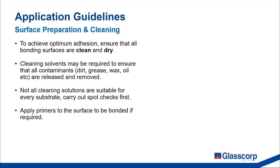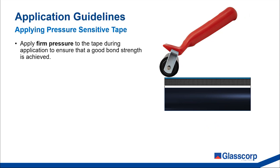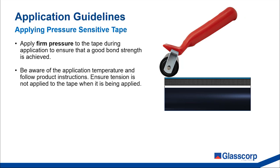Apply primer to the surface to be bonded if required — it's not something we commonly come across, but if you have a substrate that you can't find any suitable tape to adhere to, get in touch and we will help you out. The bond strength of a pressure sensitive adhesive tape is dependent on the amount of adhesive-to-substrate contact developed. Applying firm pressure to the tape during application is a requirement to ensure good bond strength is achieved — this is very important and shouldn't be taken for granted. Be aware of the application temperature and follow product instructions. Ensure that tension is not applied to the tape and that it is not being stretched as it is applied, as this will weaken the bond strength.